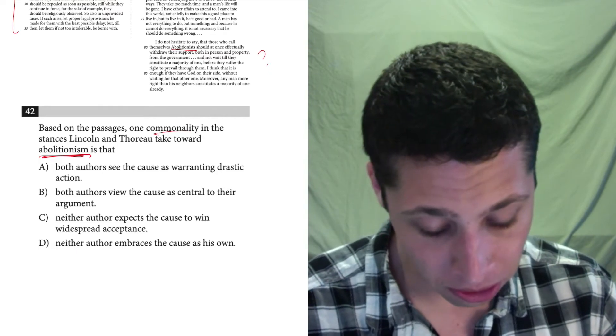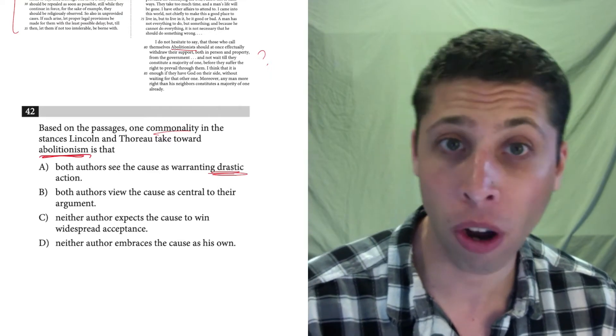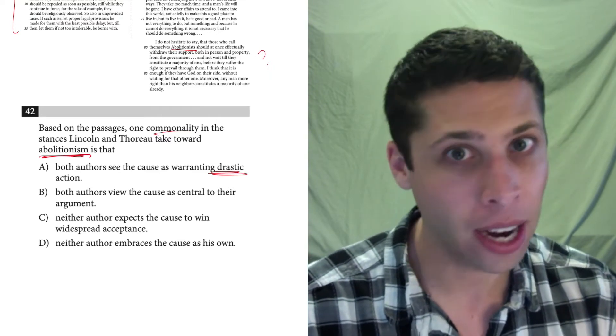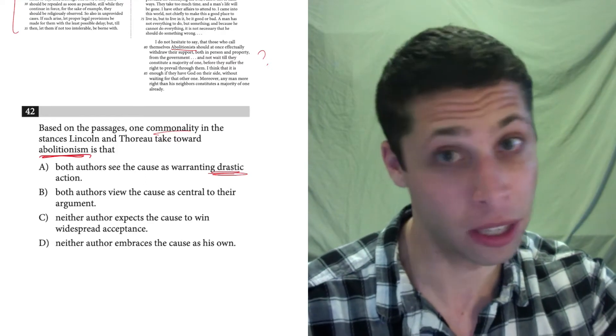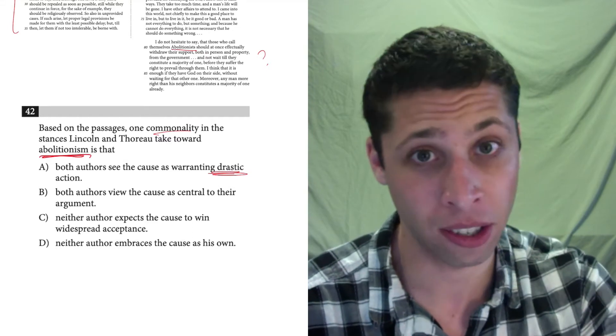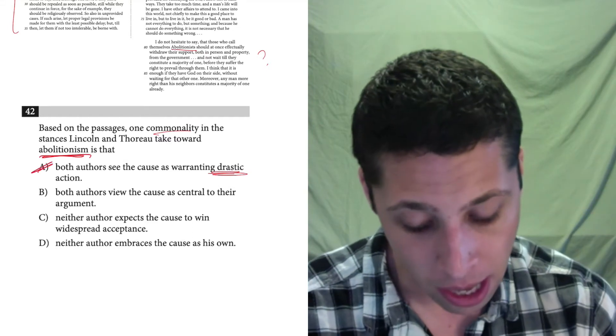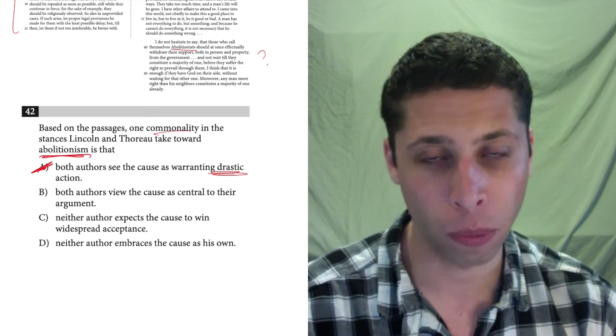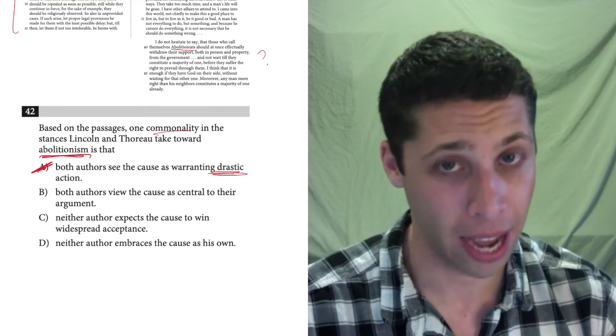Okay. Both authors see the cause as warranting drastic action. Well, drastic is about as strong of a word as we get, and I think I would have read that, them saying, we need to get rid of slavery. They were not saying that, certainly not Lincoln. He was doing what I just said, this passing no judgment, like, if it is right, if it is wrong kind of stuff. So, that's too strong for what I read. I would have known if they were saying that abolitionism requires drastic action.